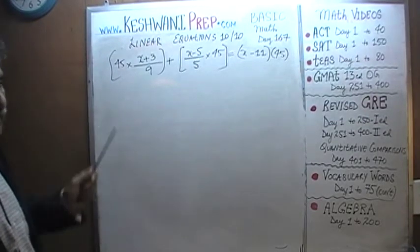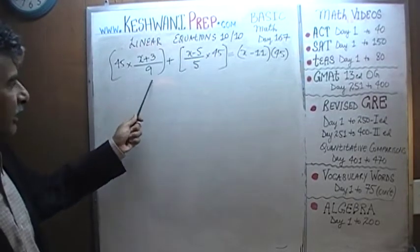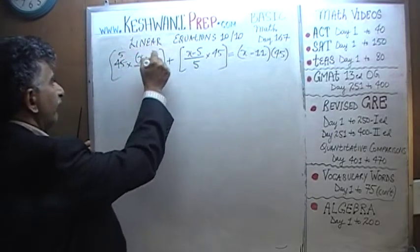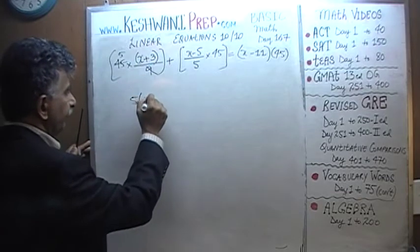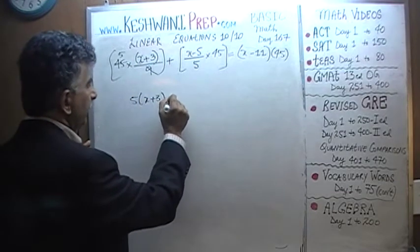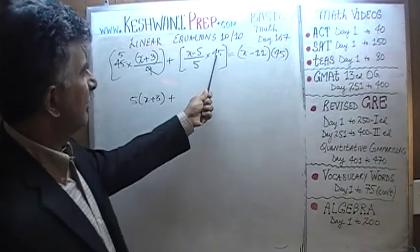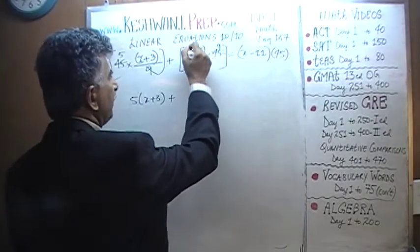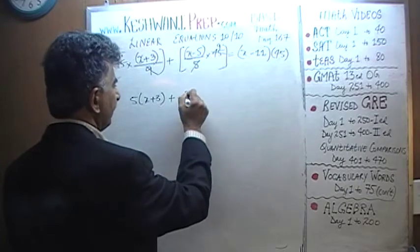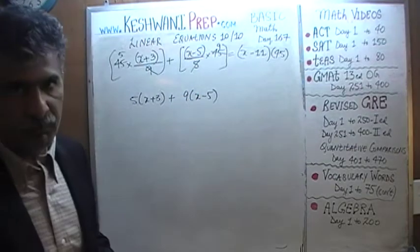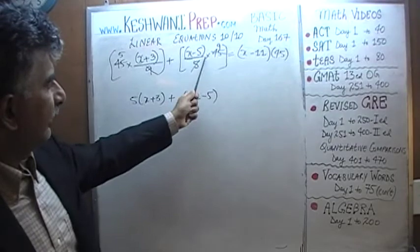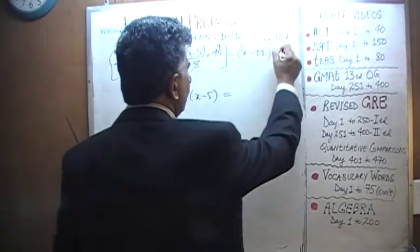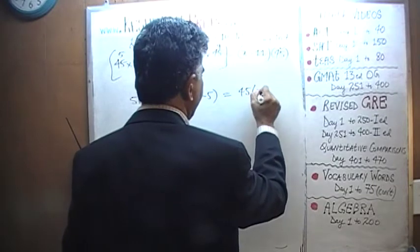And take the third term and multiply that by 45. And when I say third term, I mean the term that you see on the right hand side. Now we have a 9 at the bottom, we have 45 from the top, let's divide top and bottom by 9. 9 goes away and 45 becomes 5. So we end up with 5 times x plus 3. And here, we have a 5 at the bottom, we have 45 at the top, let's divide top and bottom by 5. This becomes 9 and we end up with 9 times x minus 5. And finally we have 45 times x minus 11.